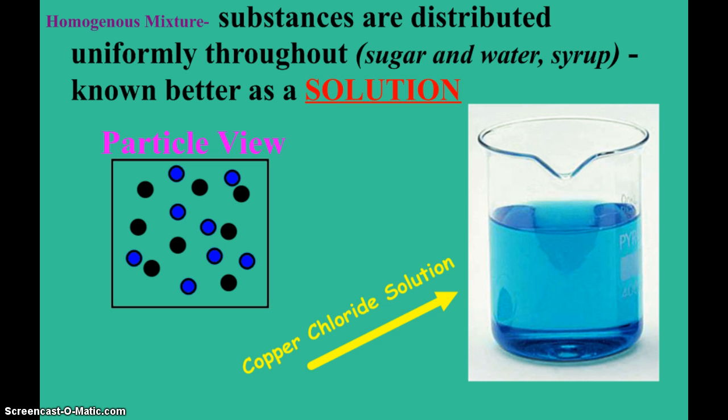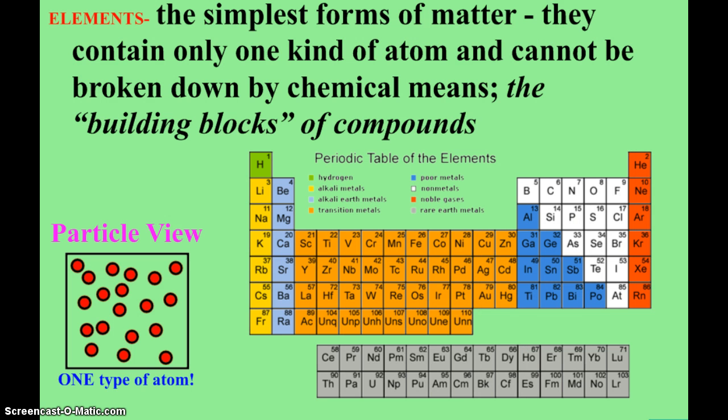Now, as it says in your notes packet, we can separate a mixture into its components, and our components are substances, and there's two types of substances. One, we have our simplest type of substance, which is an element.